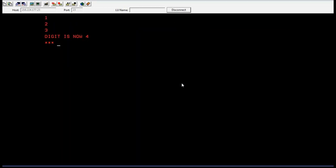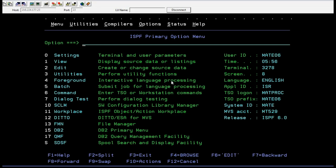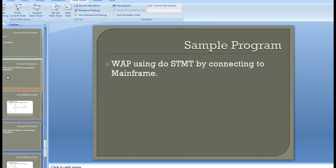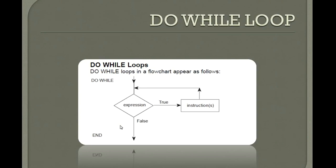Now let's see the flow of DO WHILE. The DO WHILE loop flowchart is as follows: first it starts with DO. If the expression is true, it executes the instructions, then goes back to DO and executes again. It will execute until it reaches a false condition. This loop continues unless the expression becomes false, at which point it comes out of the END.